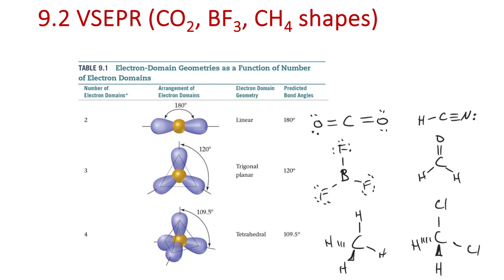So we were getting into VSEPR theory. This stands for valence shell electron pair repulsion theory. The valence shell electrons in molecules cause the electrons in these domains to repel each other. So if we have two total domains, they're going to spread out 180 degrees relative to each other — they get as far away from each other as possible, because those bonds contain electrons, and electrons repel each other.